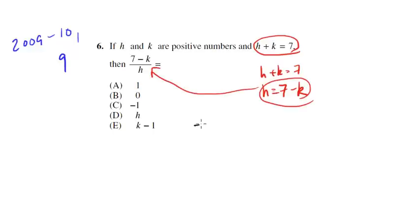So what am I going to get? I'm going to get 7 minus k over h. That's the same thing as 7 minus k over, we're going to substitute 7 minus k in for h, 7 minus k, and what do you know? That equals 1. So it's choice A.